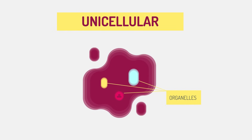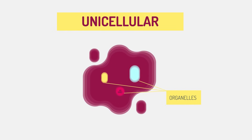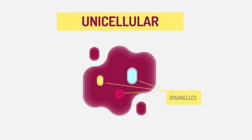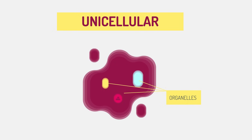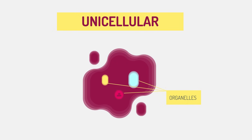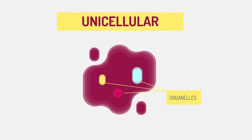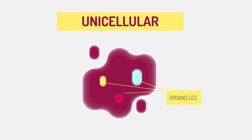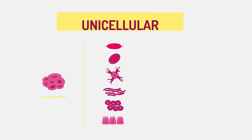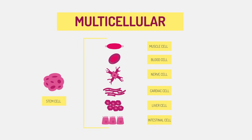The decreased ability to share out life's processes means unicellular organisms have a low level of efficiency, whereas multicellular organisms are highly efficient, with division of labor at the cellular, tissue, or organ system level.